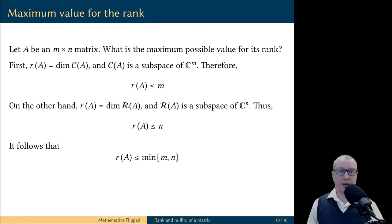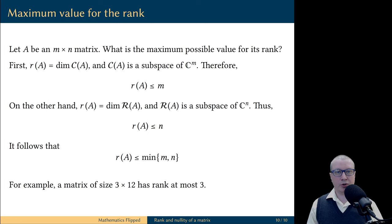the number of rows and the number of columns. For example, if you have a rectangular matrix of size 3 by 12, then its rank cannot be more than 3. This should be clear intuitively because you cannot fit more than 3 leading ones in such a matrix.